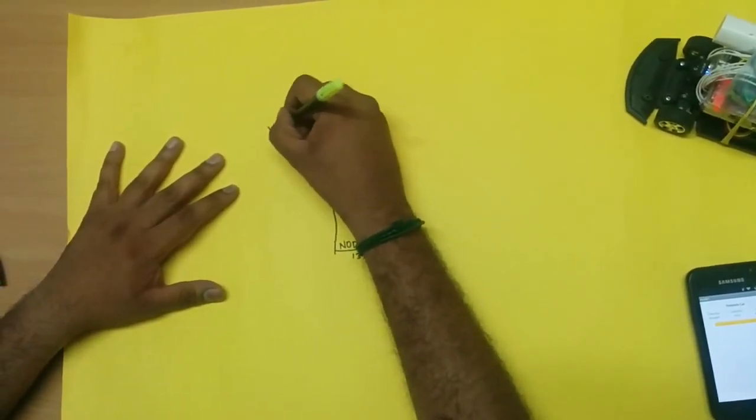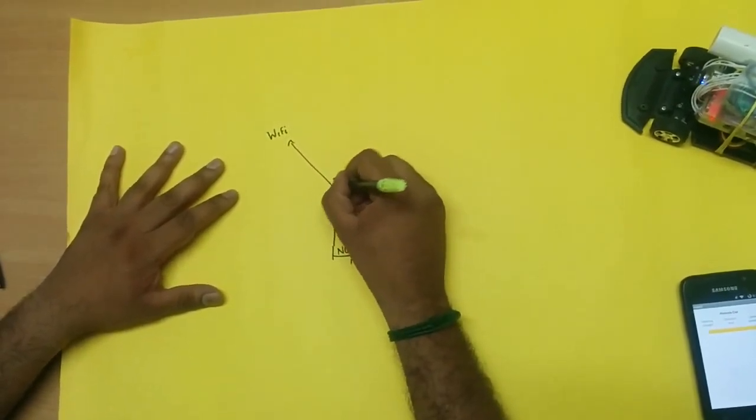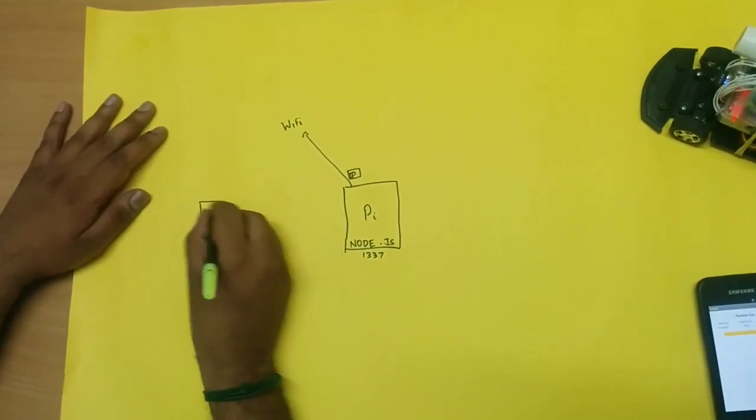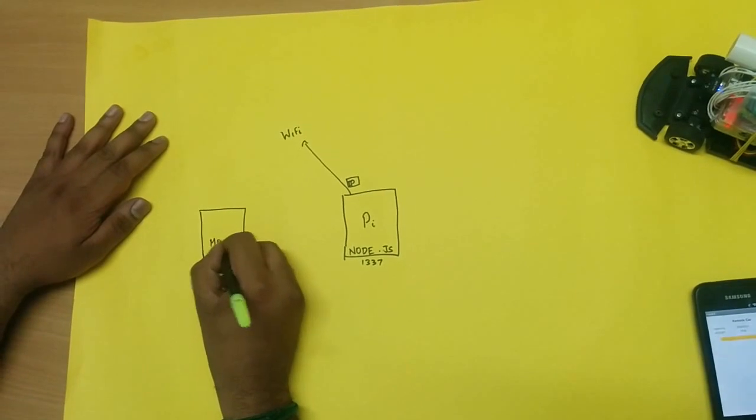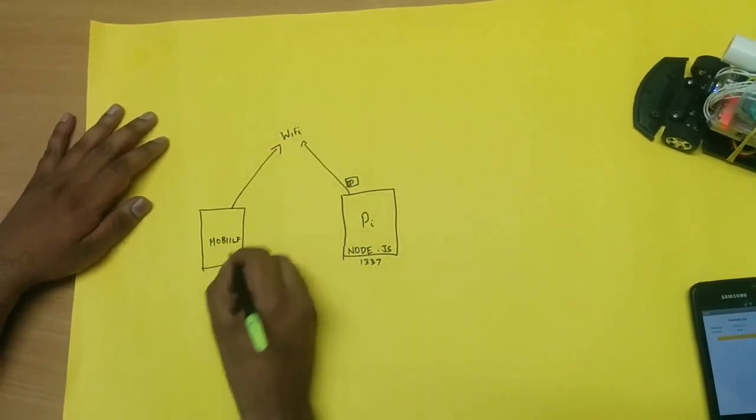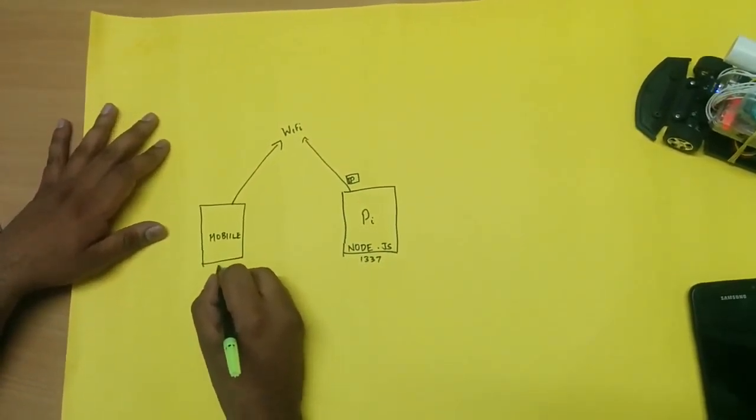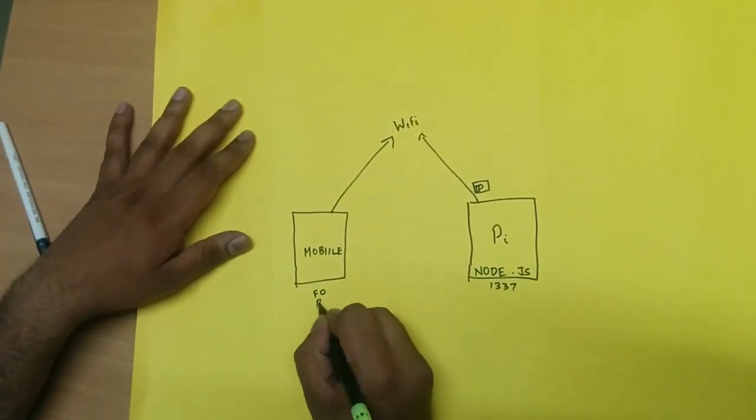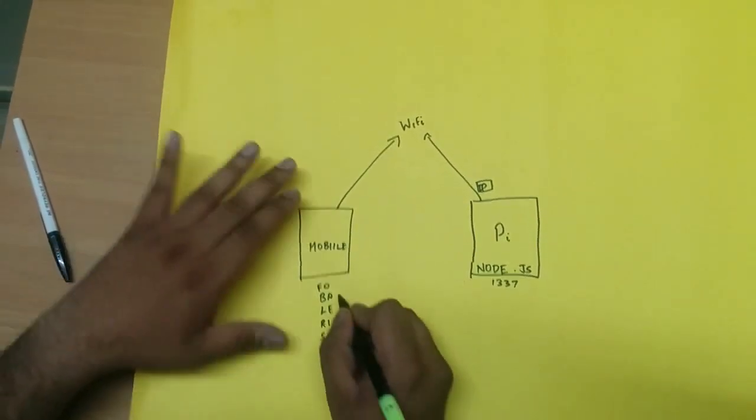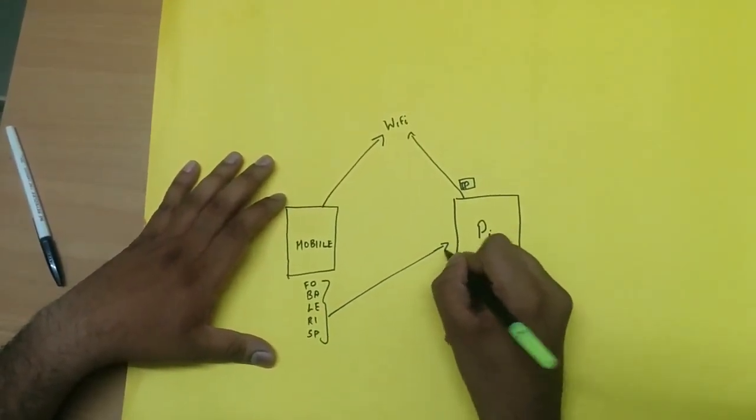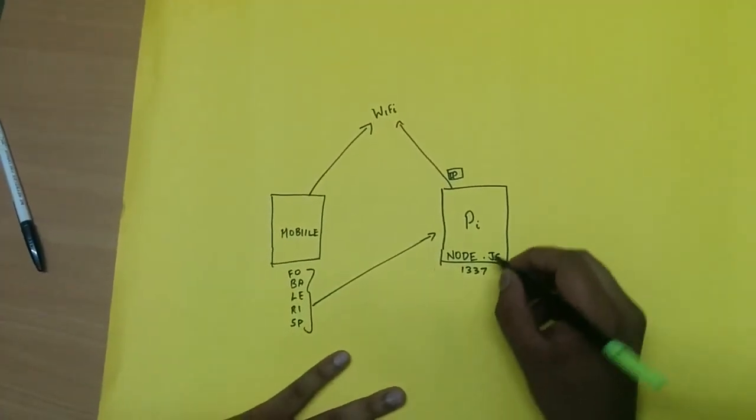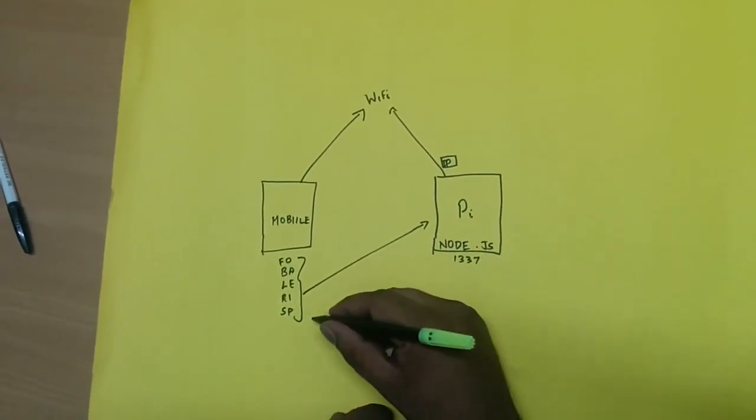So this raspberry pi is connected to the Wi-Fi network with an IP which I know and there is a mobile device. This mobile device is connected to the Wi-Fi and the user inputs like forward, backward, left, right and the speed are taken from the mobile and passed to the Raspberry Pi. This communication happens via the Wi-Fi because the mobile knows the IP address of the Wi-Fi.